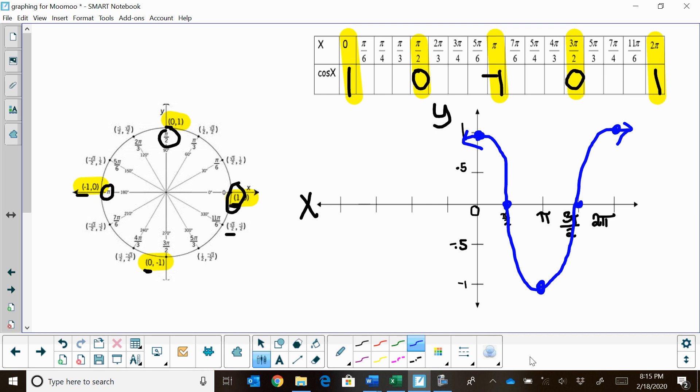There's one full cycle. We call that a period. So the period for cosine is the length of 2π because it takes a full unit circle to cycle all the way through cosine. That's how you can graph it.